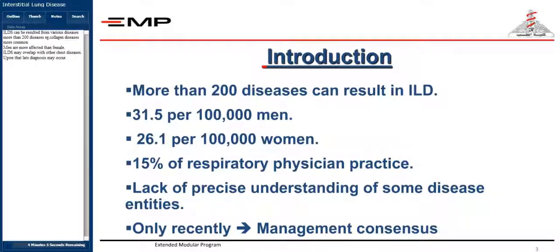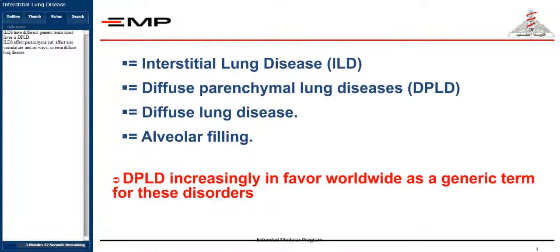ILDs can result from various diseases — more than 200 diseases. For example, collagen disease is more common. Men are more affected than females. ILDs may overlap with other chest diseases, and as a result, late diagnosis may occur. ILDs have different generic terms; most favor DPLD.